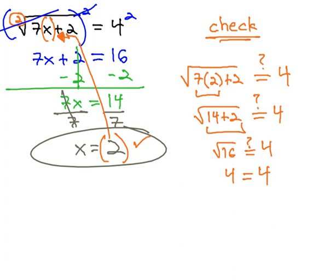So in order to clear a radical, we use an exponent, making sure that if the index is even in the original problem, we check the solution.